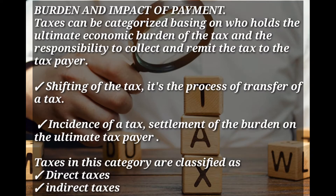We shall first look at a term called shifting of tax. This is the process of transfer of the tax from one person to another, mainly from the manufacturer to the consumer. Then we have incidence of tax, which refers to the settlement of the burden on the ultimate taxpayer — the person who finally pays the tax. In this category of burden and impact of payment, we look at two things: direct and indirect taxes. The difference between these two forms arises due to who bears the obligation to pay and the incidence of tax.